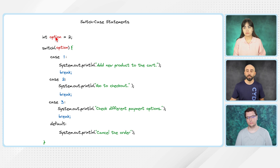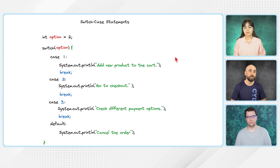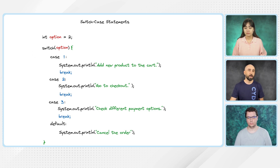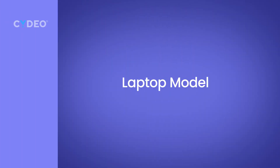We also have the default statement. Just like in if statements, if none of the conditions is true it goes to else, in switch case, if none of the cases match exactly with our option, it will just go to default and perform that statement. For example, if our option is four and we have no case with four — case one no, case two no, case three no — it will execute the default statement, which is cancel the order. I hope this short review is clear. Now we can go to our questions.